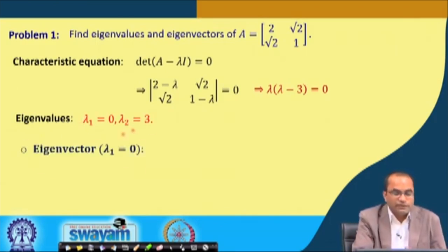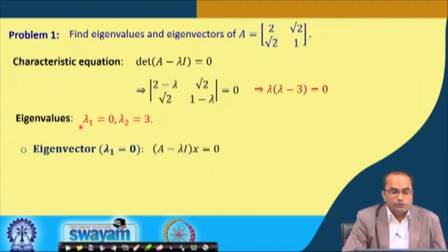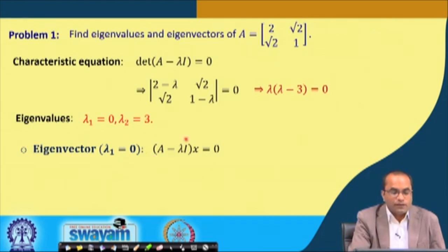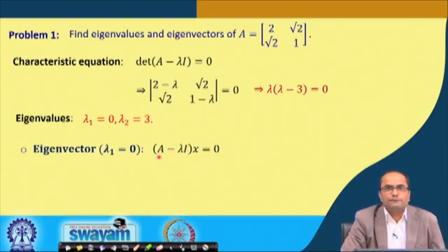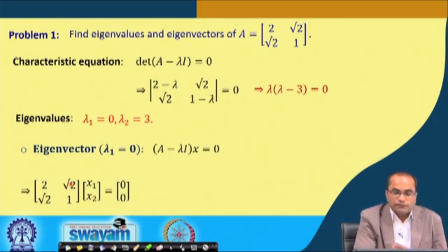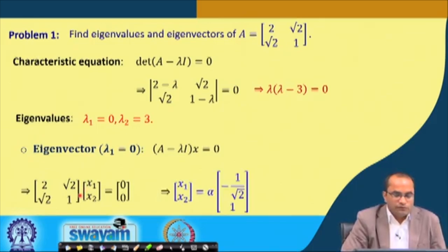Now we compute the eigenvector corresponding to lambda 1 equals 0. We solve the system A minus lambda I times x equals 0, which with lambda equals 0 is simply Ax equals 0. The matrix A is 2, square root 2 in the first row and square root 2, 1 in the second row, and we need the null space of this system.